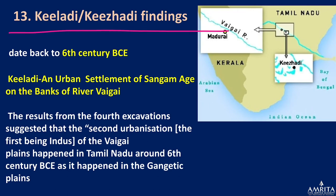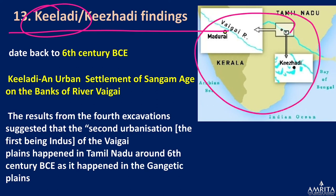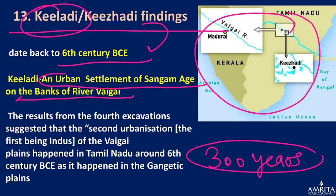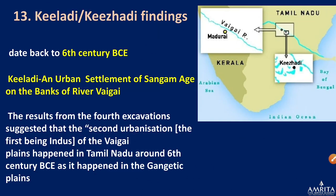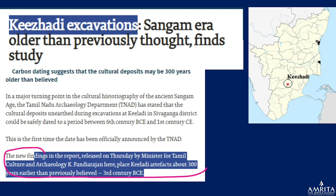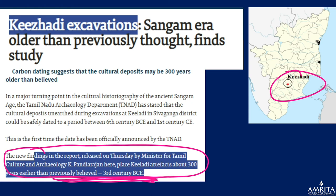Next is the Keeladi excavation finding. Similar to the Rakhigarhi project, Keeladi is very significant from the Sangham history perspective. These findings date back to the 6th century BCE — an urban settlement of the Sangham age on the banks of the Vaigai River. The fourth excavation results suggest that the second urbanization of the Vaigai perhaps began in Tamil Nadu in the 6th century BCE, as it happened in the Gangetic plain. This places Keeladi artifacts about 300 years earlier than the previously believed 3rd century BCE.